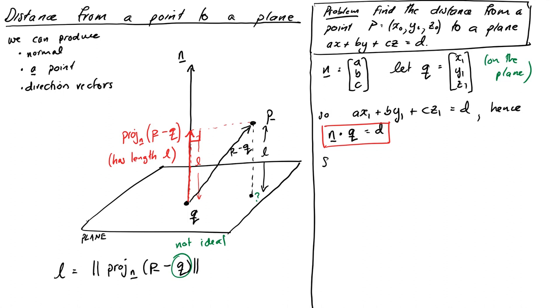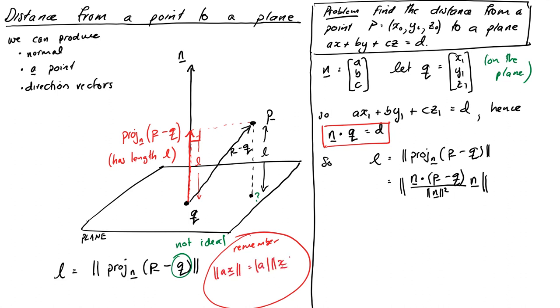So from our work before, we had L as the projection onto N of P minus Q. So let's substitute in our projection formula. So that is the norm of the big expression in the middle. N dot P minus Q all divided by the norm of N squared all times N. And then we end our norms. It's a pretty horrible looking expression. But actually, it's just the length of a scalar. The scalar is quite complicated, but it's just a scalar times a vector. And we know how to deal with that. It's just norm of AX equals absolute value of A norm of X kind of in disguise.